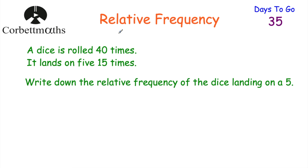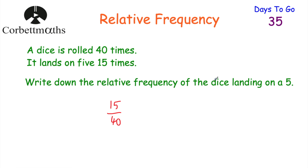Today we're going to be looking at relative frequency. A dice is rolled 40 times and it lands on a 5 fifteen times. Write down the relative frequency of the dice landing on a 5. If you think you know how to try this one, feel free to press pause. So the dice was rolled 40 times and it lands on a 5 fifteen times, so the relative frequency of a 5 would be 15/40, because it lands on a 5 fifteen times out of the 40 times it was rolled.